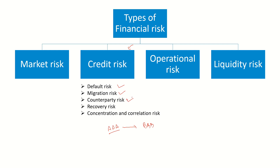Counterparty risk is where the third party to whom you have given the loan will not be able to satisfy his obligations. Recovery risk is, in the case of default, how much amount you will be able to recover — will it be 0% recovery or will you recover some amount? And then concentration and correlation risk — something many banks in India are facing. Correlation risk is when something bad happens in the economy, not just one company defaults but many companies default together. Concentration risk is when, say, out of a total loan book of 10 lakh rupees, you have given 8 lakh to a single party. If that one person defaults, the majority of your loan book is destroyed.